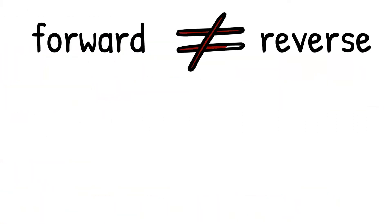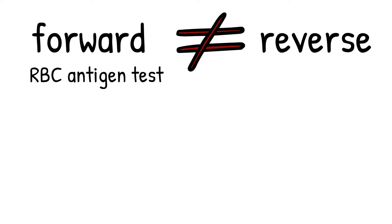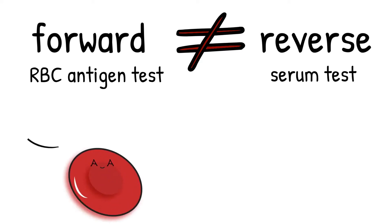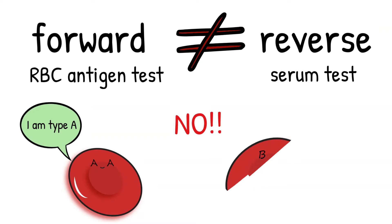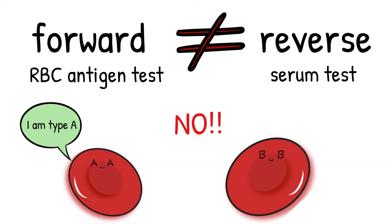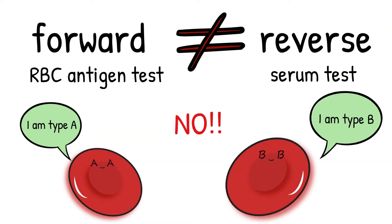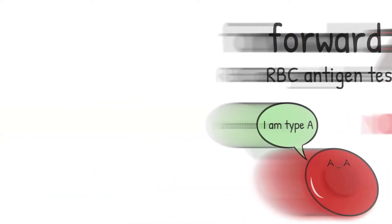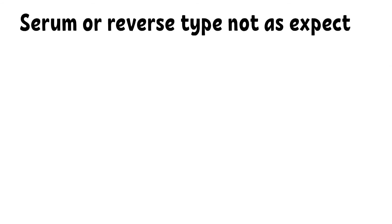Once again, a discrepancy exists when the results of the red blood cell test and the serum test do not agree. This can be caused by either an unexpected positive or unexpected negative. The serum or reverse type is not as expected.